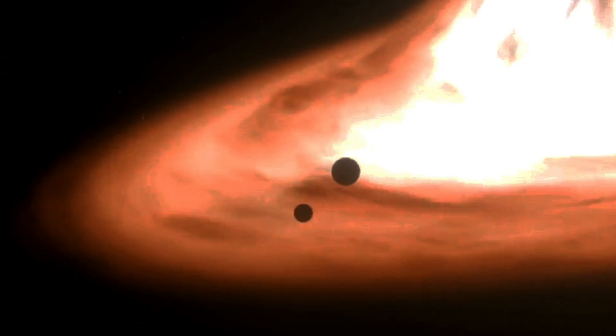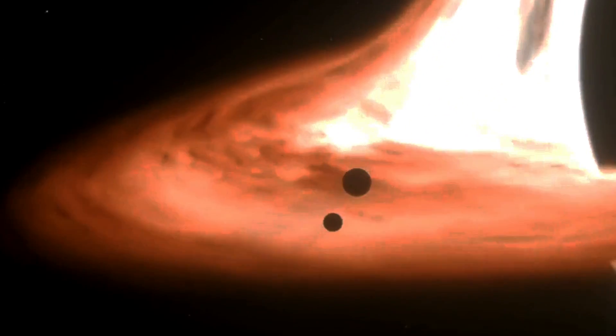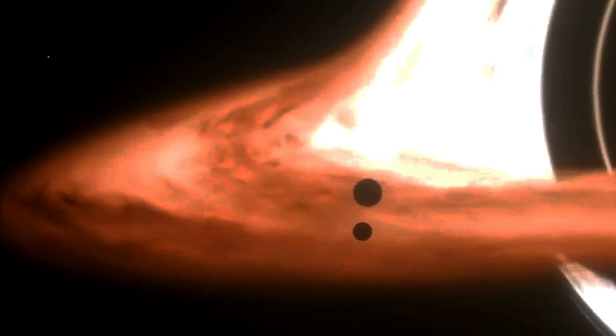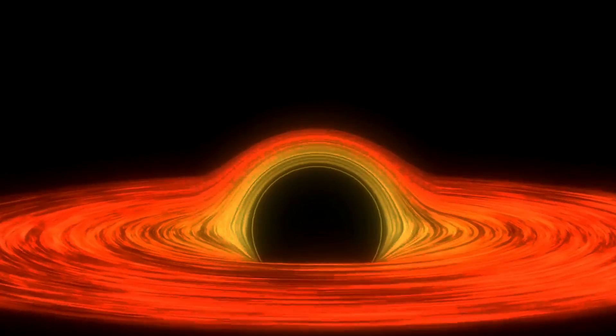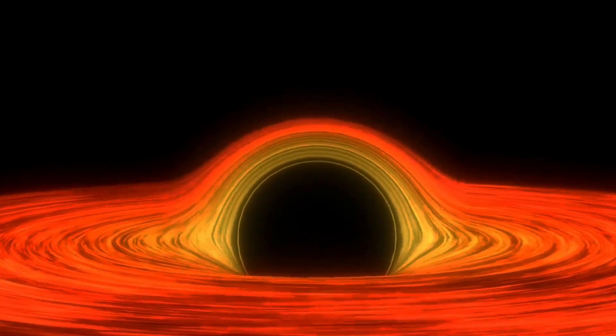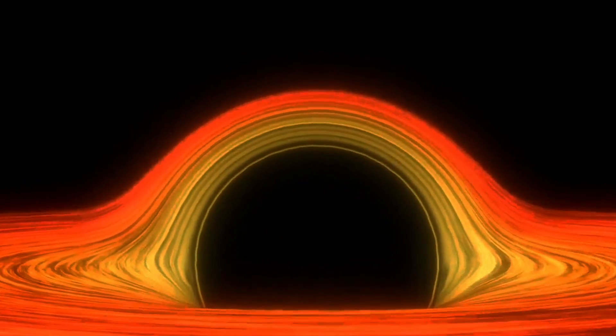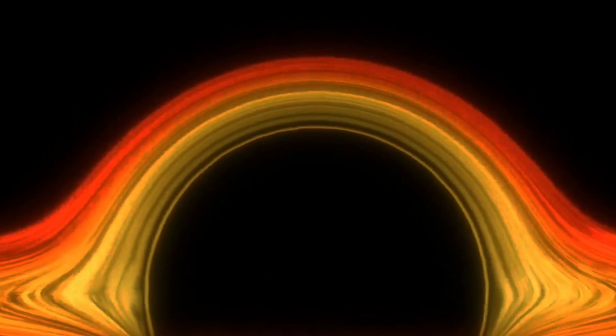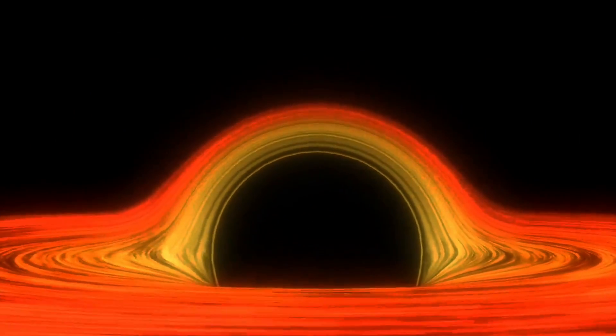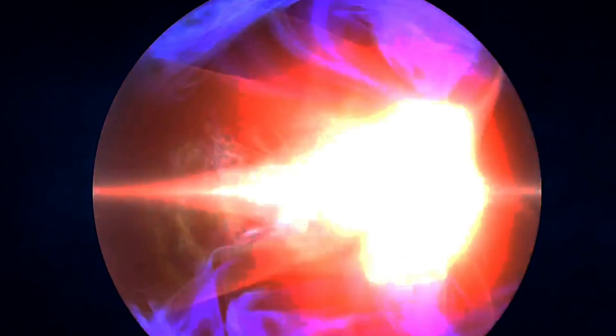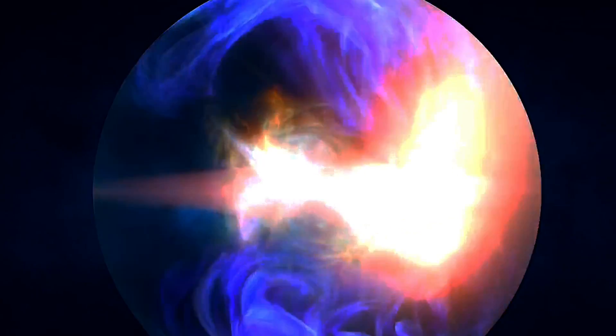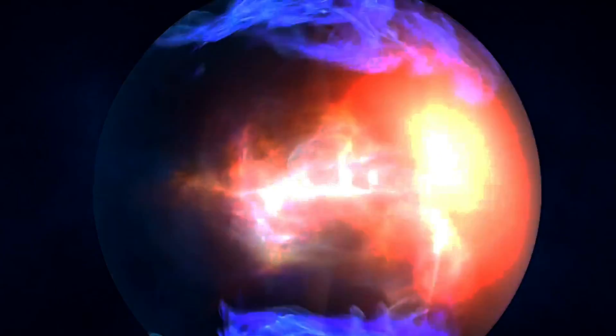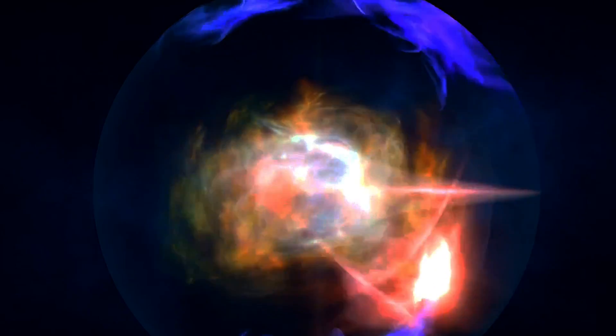The Schwarzschild radius and the event horizon are both characteristics of black holes, but they are not the same. To clarify, the event horizon of a black hole is the limit of the black hole's influence. It is the boundary separating the region of influence of the black hole from the rest of the universe. Essentially, it's the point beyond which nothing, not even light, can escape the gravitational pull of the black hole.